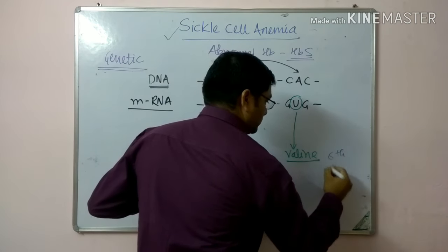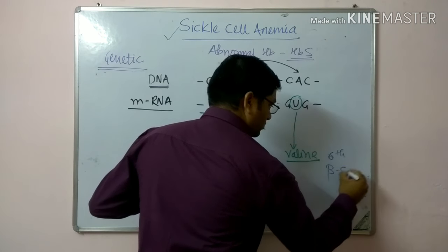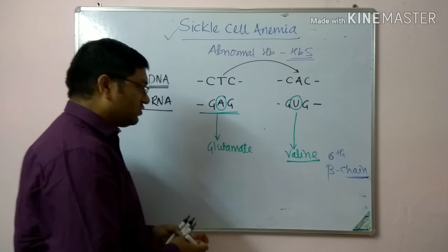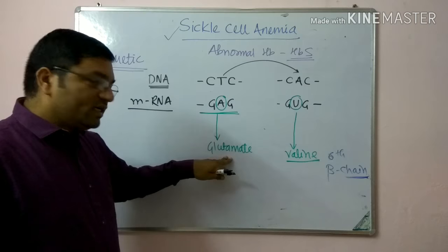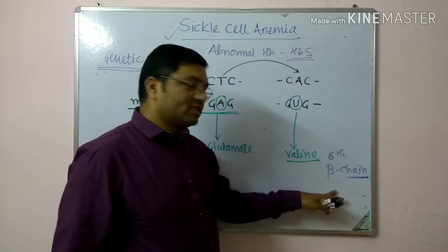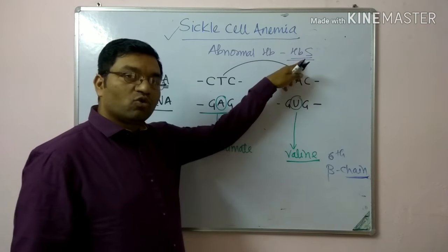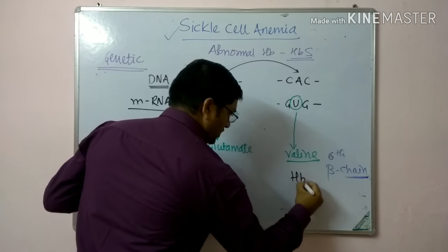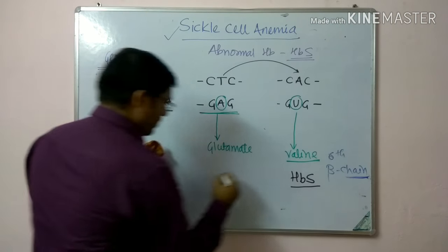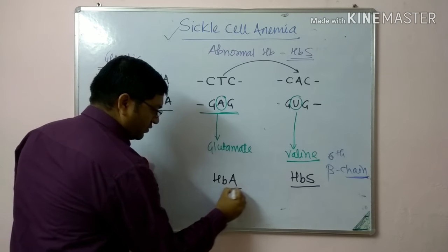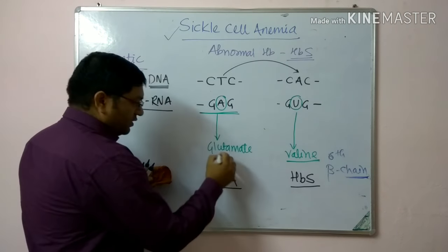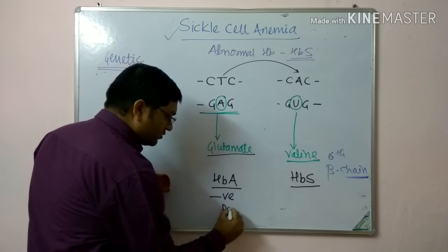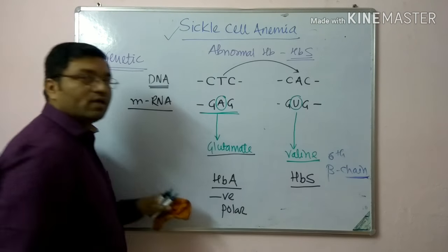This change occurs at the sixth position of the beta chain of hemoglobin. So glutamate is replaced by valine at the sixth position of the beta chain, resulting in the formation of the abnormal hemoglobin known as hemoglobin S. Normal hemoglobin is hemoglobin A.